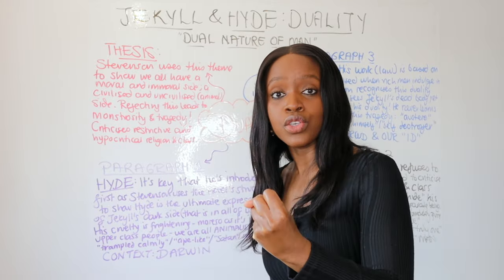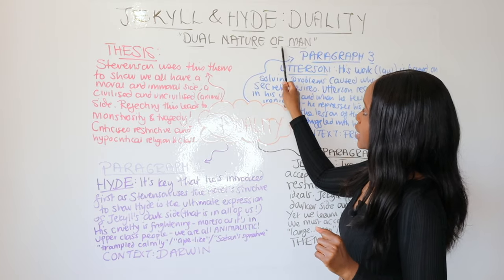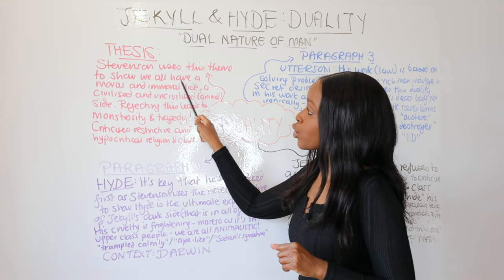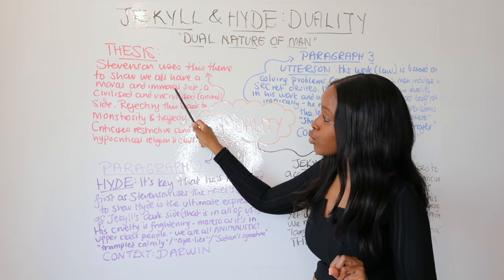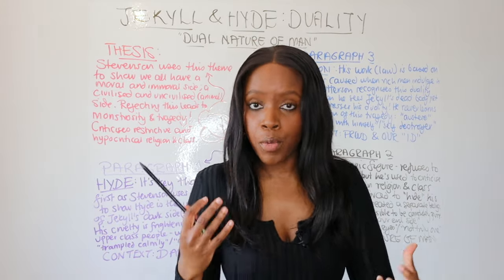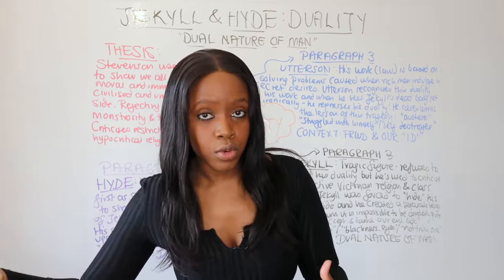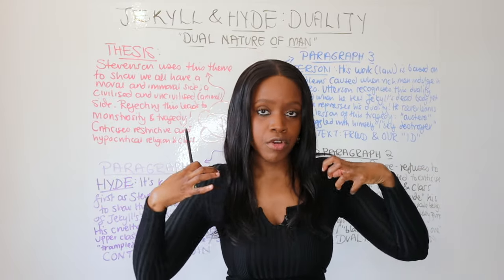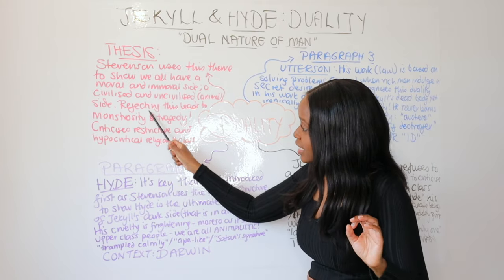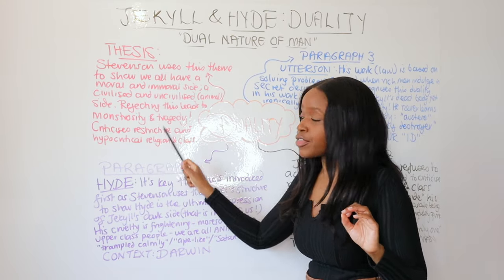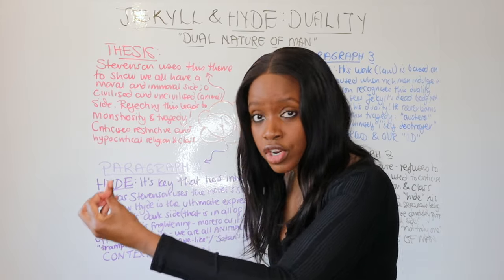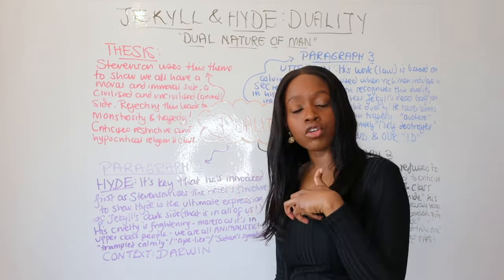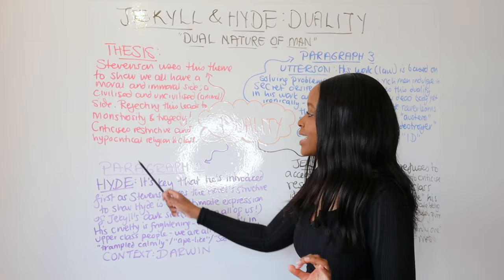Stevenson uses the theme of duality - the dual nature of man - to demonstrate that all of us, regardless of class or gender, have both an immoral and a moral side, a civilized and an uncivilized side. We are both human and advanced forms of animals. Within all of us there is a good side and an evil side, and we need to accept it. Rejecting this duality rather than accepting it is what leads to monstrosity and the tragedy of Dr Jekyll and Mr Hyde.